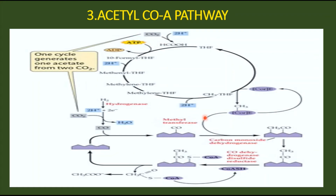So one pathway is involved in forming what we call the methyl group of acetate, and the other reduces to the carbonyl group. Those two combine giving rise to acetyl-CoA, which is then carboxylated resulting in a pyruvate molecule. The key enzyme of the whole acetyl-CoA pathway is carbon monoxide dehydrogenase, or simply CO dehydrogenase.